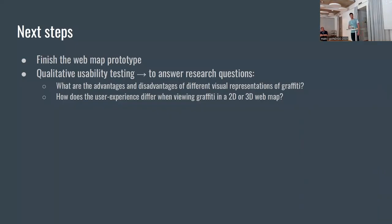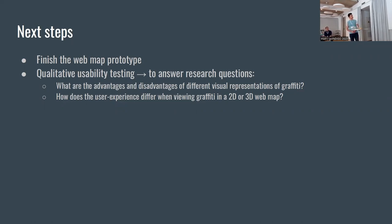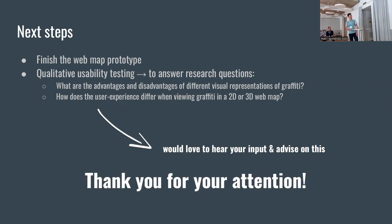Just briefly about my next steps, because my research is not finished — I'm about at the halfway point currently. I would like to finish the web map prototype and then do some qualitative usability testing to answer some of the research questions, such as: what are the advantages and disadvantages of different visual representations in 2D versus 3D? And how does the user experience differ when exploring graffiti in a 2D or 3D web map? I'll probably have about 10 people for the testing, and hopefully I'll come up with some interesting results. I would love to hear any advice or input from you.